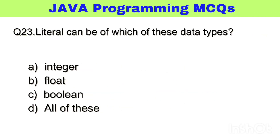Question number 23. A literal can be of which of these data types? The right answer, option D: all of these.